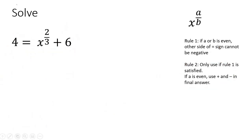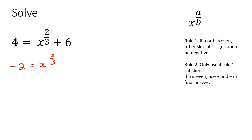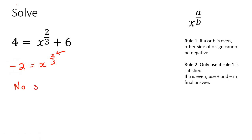Last example: take the 6 to the other side — 4 minus 6 gives negative 2. Now apply rule one: there is an even number in the exponent, and the other side is negative. Because of this, there is no solution.